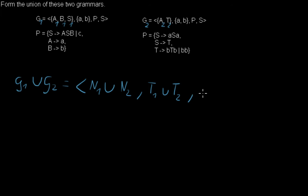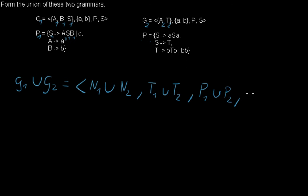I will also have the union of the two production rule sets. I didn't rename them earlier, but I have to put indices on them as well. So this will be my P1, and this will be S1, A1, S1, B1, and so on. So I will use the union of the two production rules.